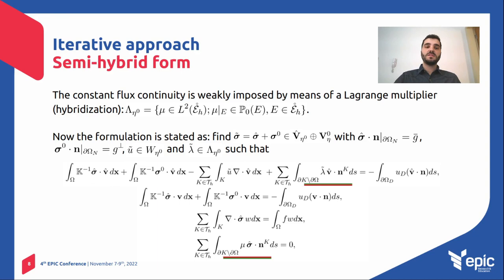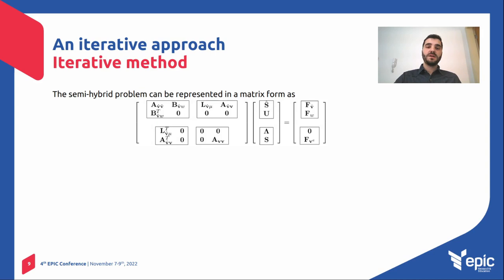And when we do that, our formulation becomes this one, with two additional terms, taking in account the Lagrangian multiplier, which is enforcing the normal flux component. And finally, our matrix problem becomes this one here, with the two additional block matrix given by these terms here.